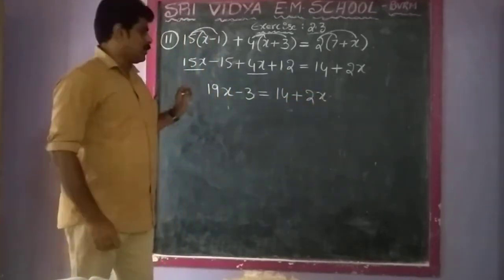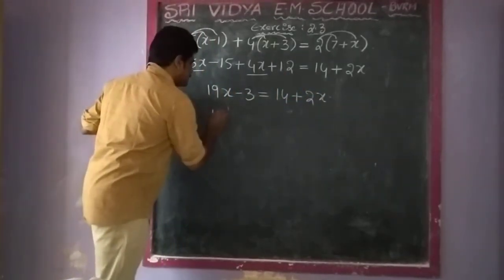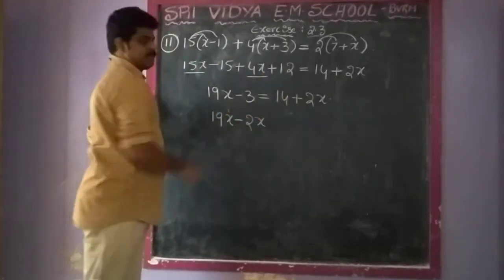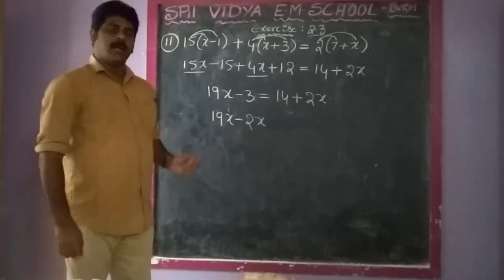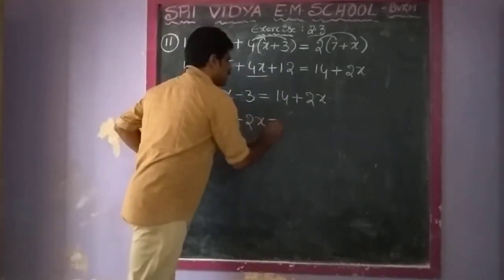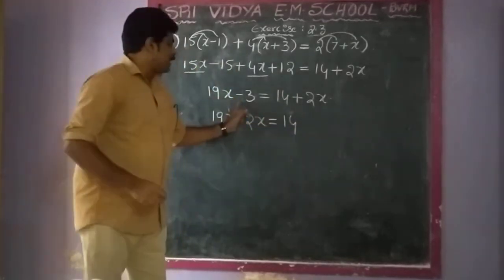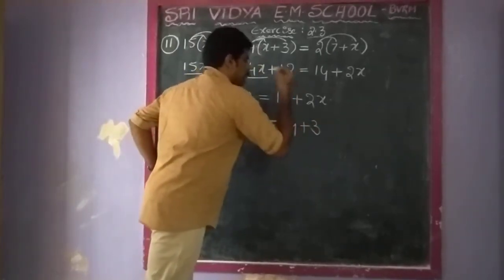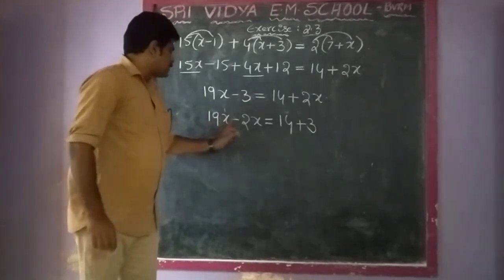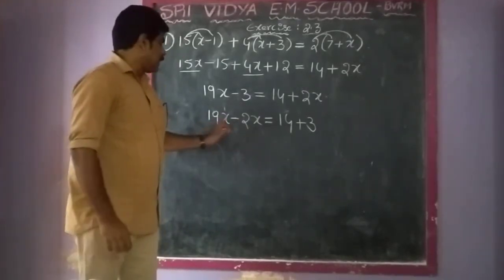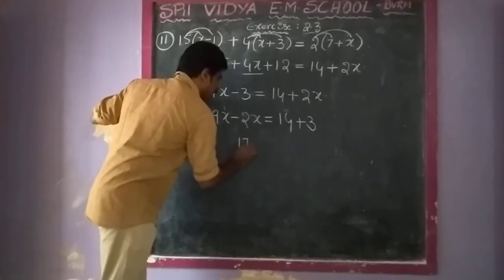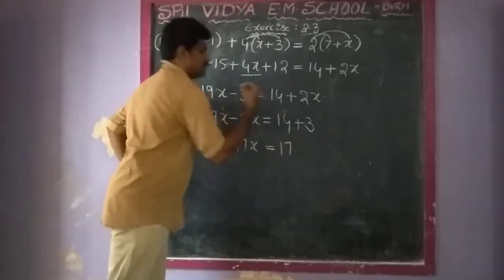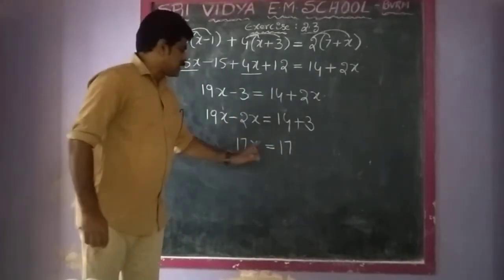Then transpose 2x to the left side: 19x minus 2x. And transpose minus 3 to the right side, so plus 3 on both sides. So 19x minus 2x equals 17x, and 14 plus 3 equals 17. Therefore 17x is equal to 17.